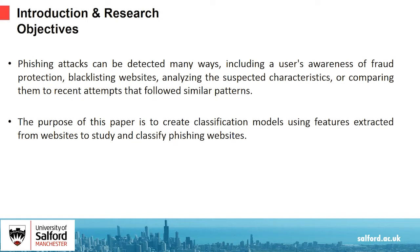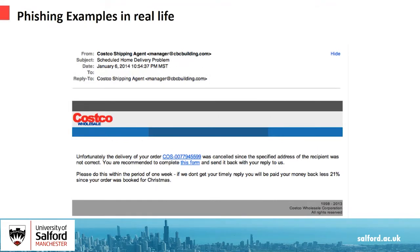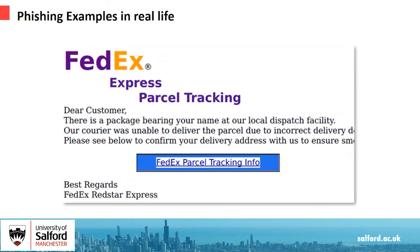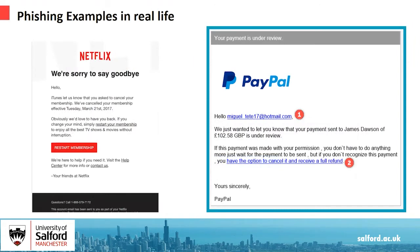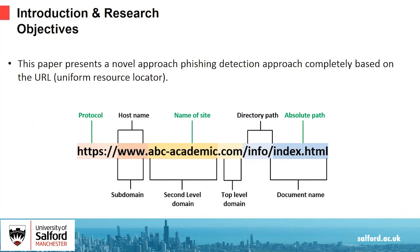The purpose of this paper is to create classification models using features extracted from websites to study and classify phishing websites. There are many examples from our lives of phishing — many fraud cases are carried out in the name of large companies, such as Costco shipping agent, FedEx Red Star Express, and PayPal. These emails passed smoothly over a while and were not classified as phishing spam emails despite the security procedures.